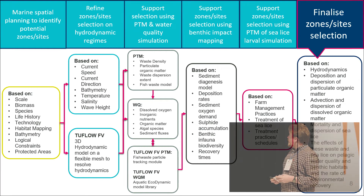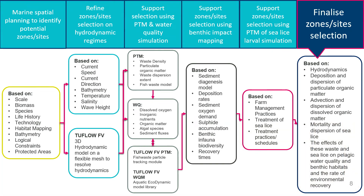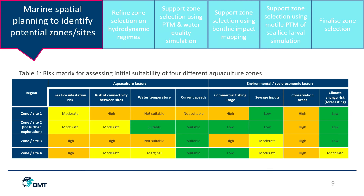I'm now going to go through the six steps employed in the framework. The first step is to identify at a high level potential zones or sites that can be used for aquaculture production. We use a traffic light system — this is a mock example we've developed. In this mock scenario, we would choose Zone 2, as the water temperature would be suitable, current speed suitable, commercial fishing usage in the area is very low, and sewage inputs are low.